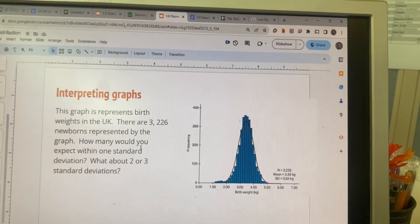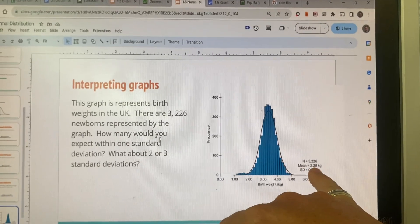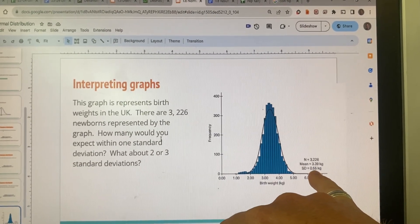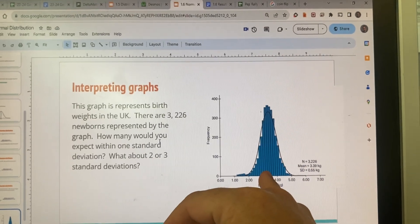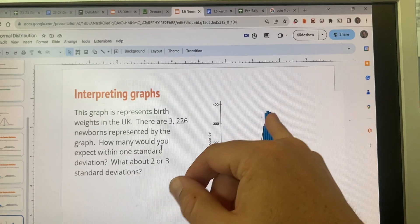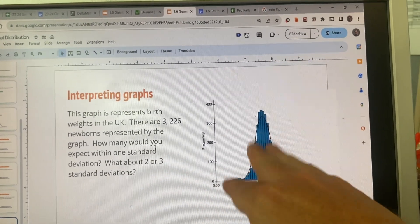So when we interpret the graphs here, it tells us the mean is 3.39 kilograms, standard deviation is 0.55 kilograms. So we have the mean weight. I mean, it's a little above what we would expect from the bell curve, but this still looks pretty good.